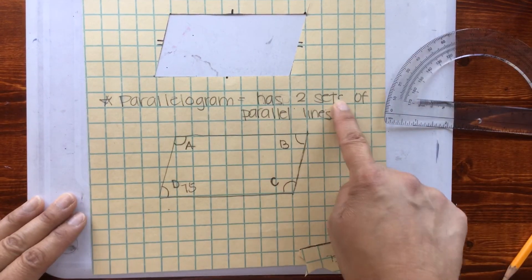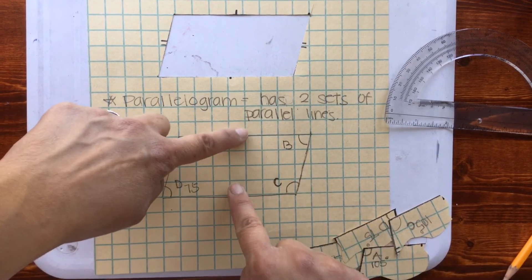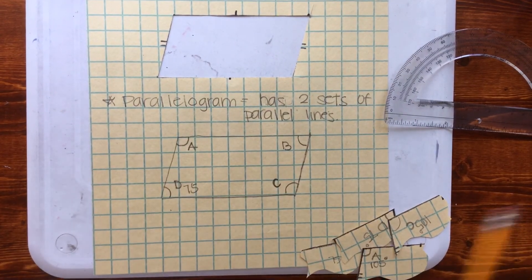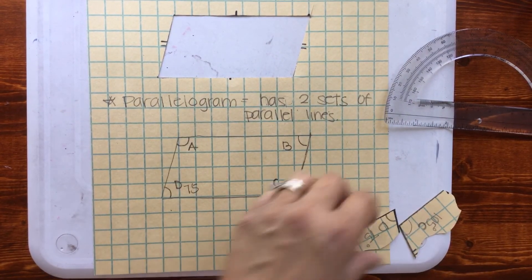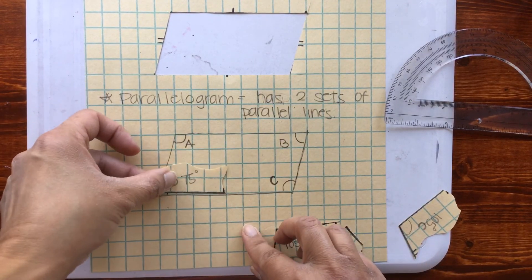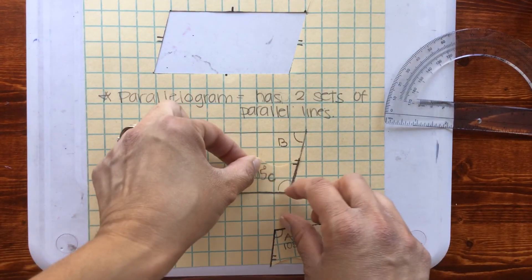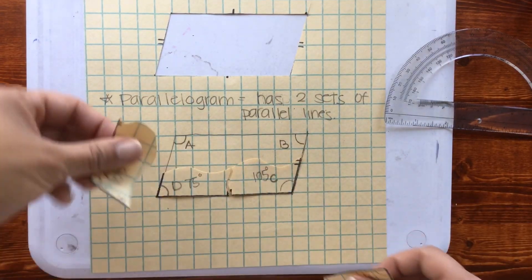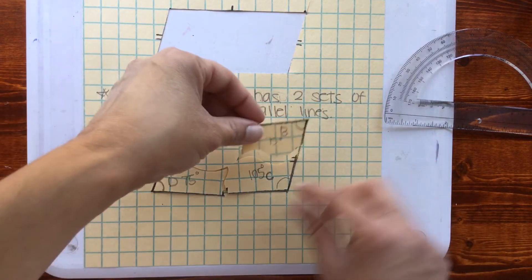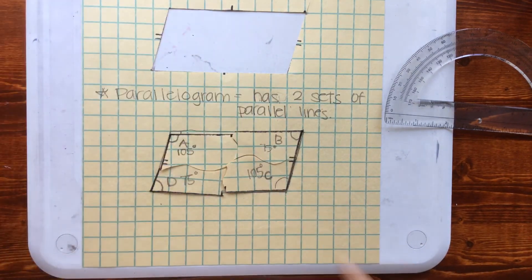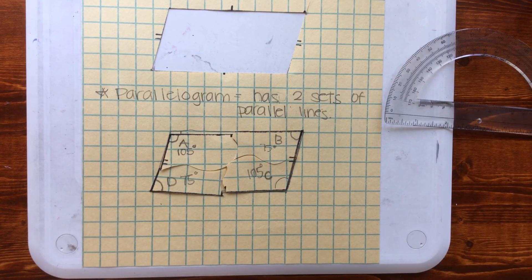So to summarize: a parallelogram has two sets of parallel lines. We also just learned something about our angles — there are two sets of angles that are exactly the same. I'm going to do another video in a moment going over some additional information about parallelograms.